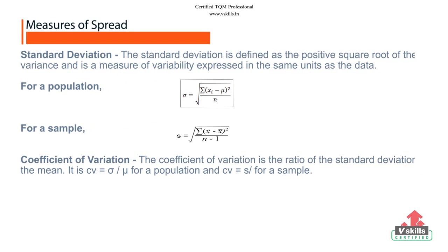Standard deviation. The standard deviation is defined as the positive square root of the variance and is a measure of variability expressed in the same units as the data. For a population, sigma equals to under root sigma xi minus mu square divided by n. For a sample, s equals to under root sigma x minus x mean square divided by n minus 1. Coefficient of variation. The coefficient of variation is the ratio of the standard deviation to the mean.